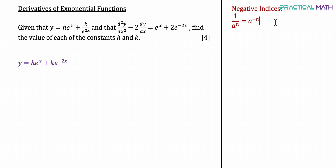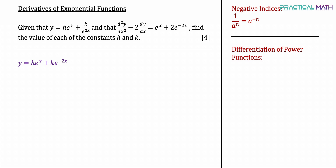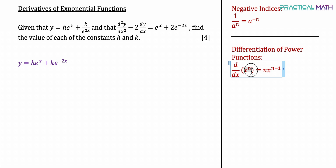Before we go into differentiation, let's do a quick recap of basic differentiations. First, differentiation of power functions: d/dx of x to the power of n gives us n times x to the power of n minus 1. So we bring down the power n, and reduce the power by 1.